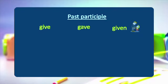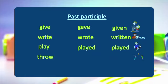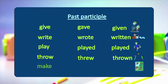Here are some examples of the past participle — the third form of the verb: give / gave / given; write / wrote / written; play / played / played; throw / threw / thrown; make / made / made.